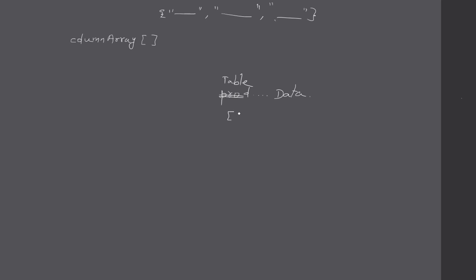Here we will create a two-dimensional array. The first dimension will match the number of columns — since we specify three columns, the first dimension will be three. For rows, you can insert any number of rows. We are creating everything as static here, but in the real world this will be data loaded from the database table.